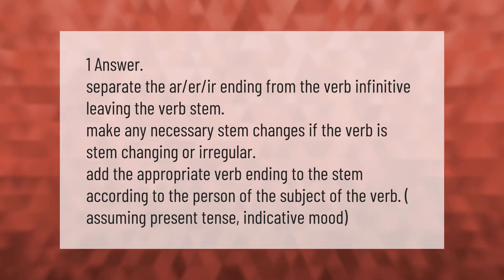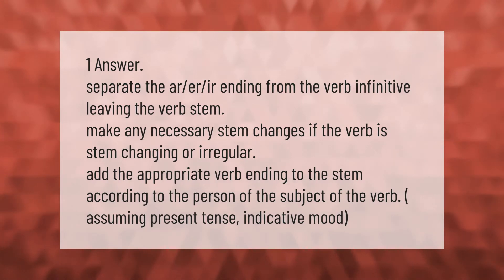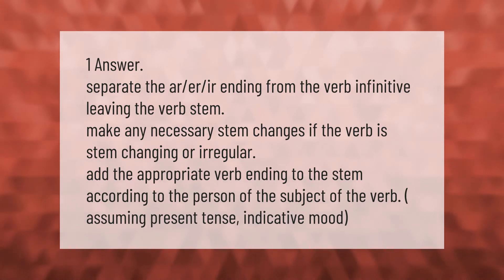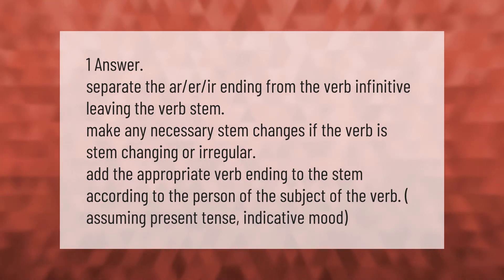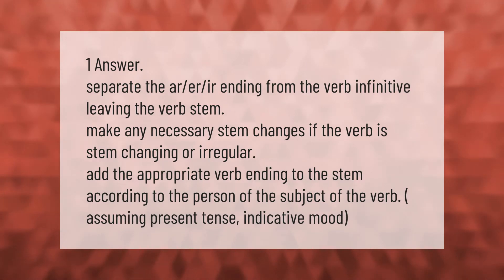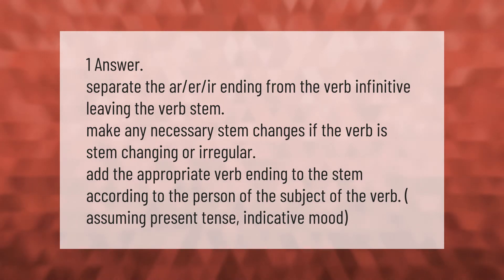To conjugate a regular verb, separate the -AR or -IR ending from the verb infinitive, leaving the verb stem. Then make any necessary stem changes if the verb is stem-changing or irregular.